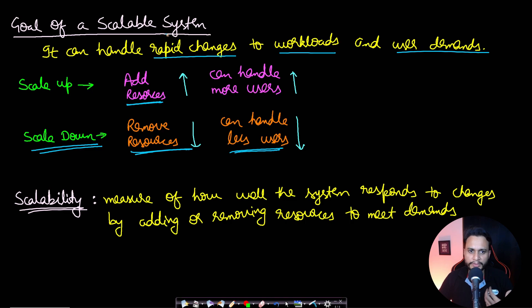Now I hope you have understood the scalable system. So what is scalability? It is nothing but just the measure of how well you can scale a system. That means the measure of how well the system responds to the changes by adding or removing the resources to meet the demands. That is how well you can scale up and scale down the system based on the fluctuating requirements.